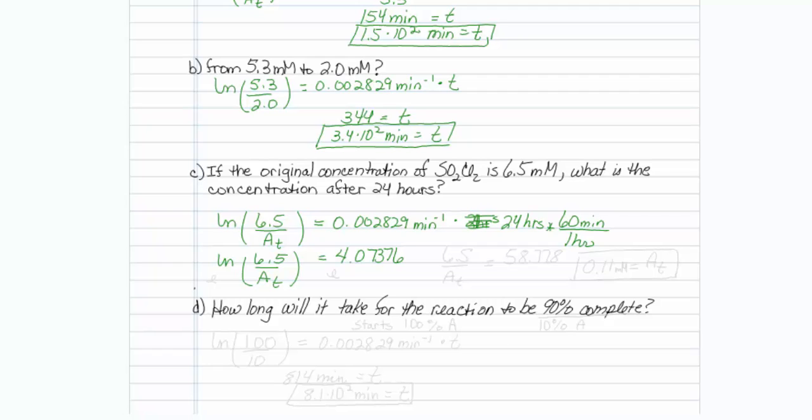Now to get rid of that natural log, I will take things to the E. So I will move this to 6.5 over A at some time T is equal to E raised to that value, which is 58.778, and I will solve for A at time T. That has to equal 6.5 divided by that value, and it turns out to be 0.11, and the units on that would be millimolar. That is my answer for that.